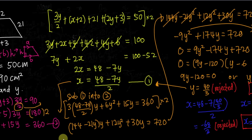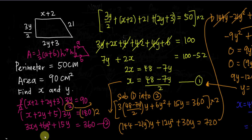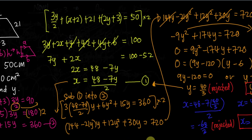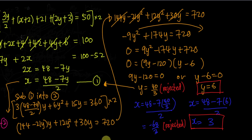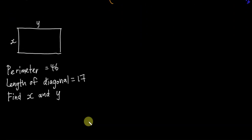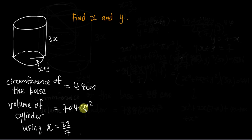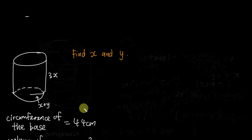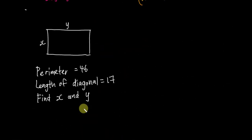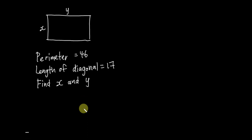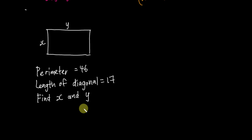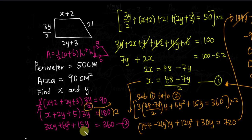This is how we solve simultaneous equation questions in Additional Mathematics. The concept is similar to normal mathematics, but in Additional Math they make the equations more complicated — you'll see y squared or x squared, and factorization can get quite tough. In the next video I'll go through another similar question — they might give you a cylinder with volume and area to form two equations. I hope this video was helpful. Thanks for watching.